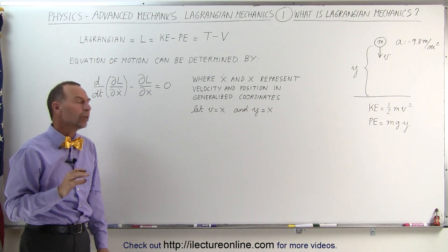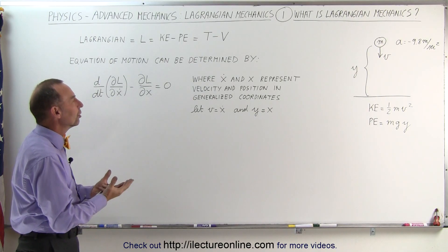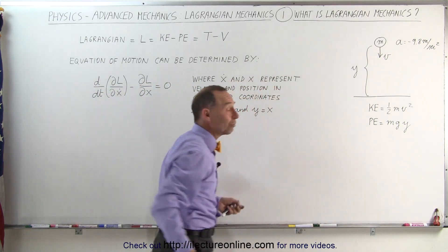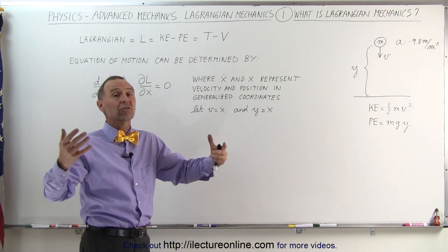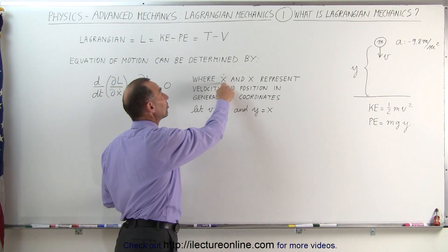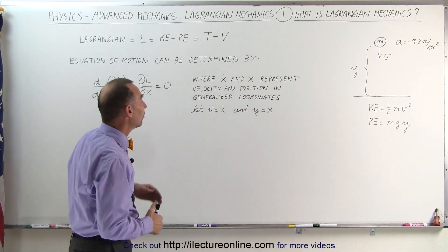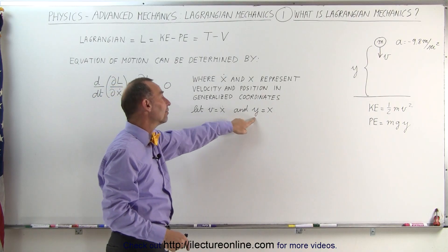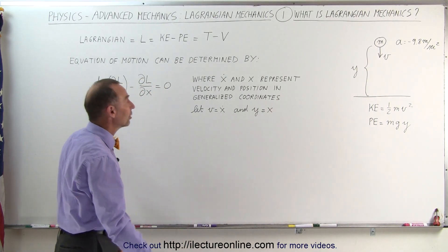Another advantage of the Lagrangian is that we can use what we call generalized coordinates. Even though the motion here is in the y direction — both velocity and position — we can simply call it x: some general variable x, where x-dot is the velocity and x represents position. So the velocity of the falling object is x-dot and the position of the object is x.